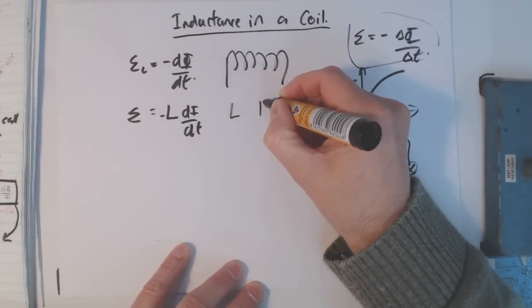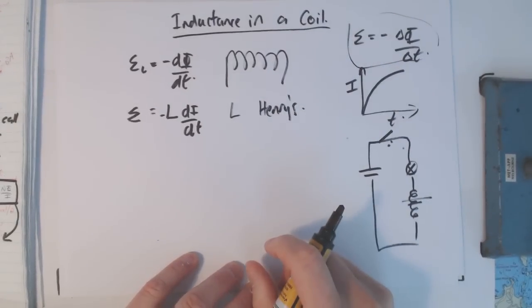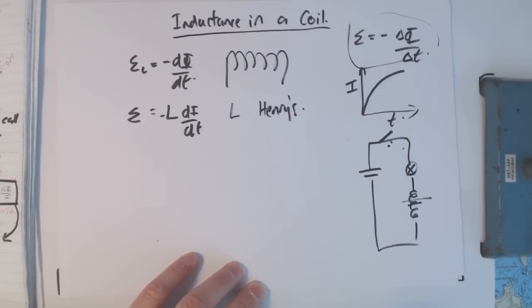So L is measured in Henry's. Once you've got that, you can work out the voltage produced. All you need to know is the rate of change of the current. You've got your L, you've got your voltage. It's as simple as that, and that's the type of problems you're going to get.